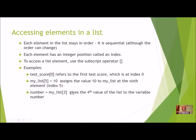Now we also learned how to access elements by using the square brackets, but in this instance it's called a subscript. Each element in a list stays in order. It is sequential, but you can change the order. You learned about that with sort. It still has an order. Each element has an integer position called an index.